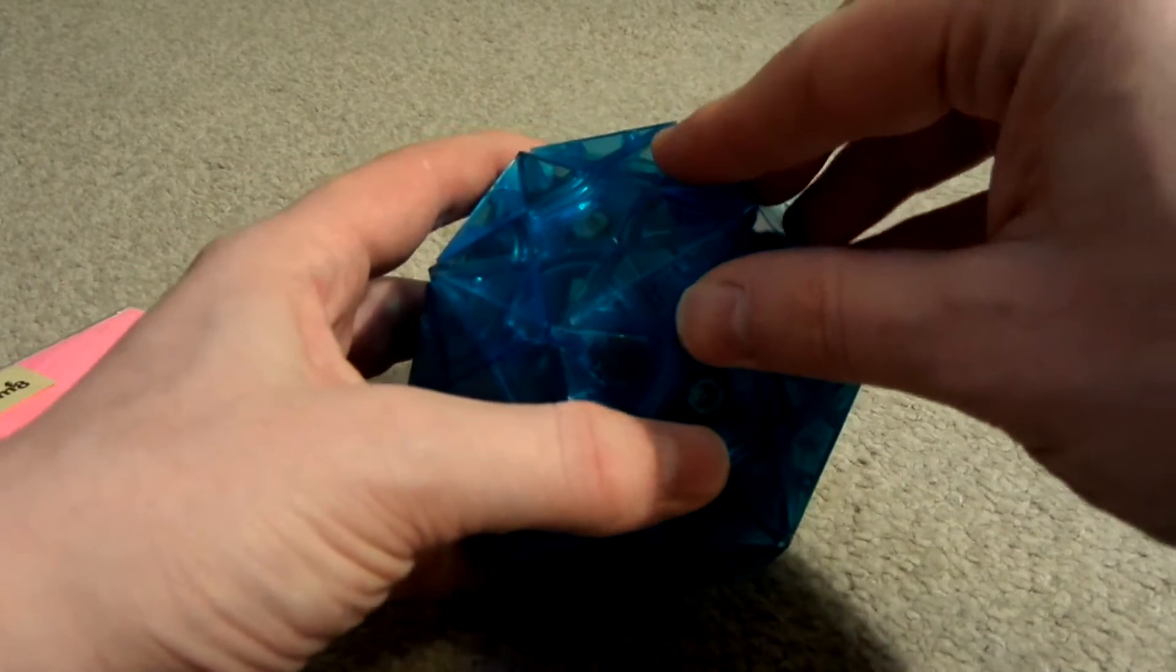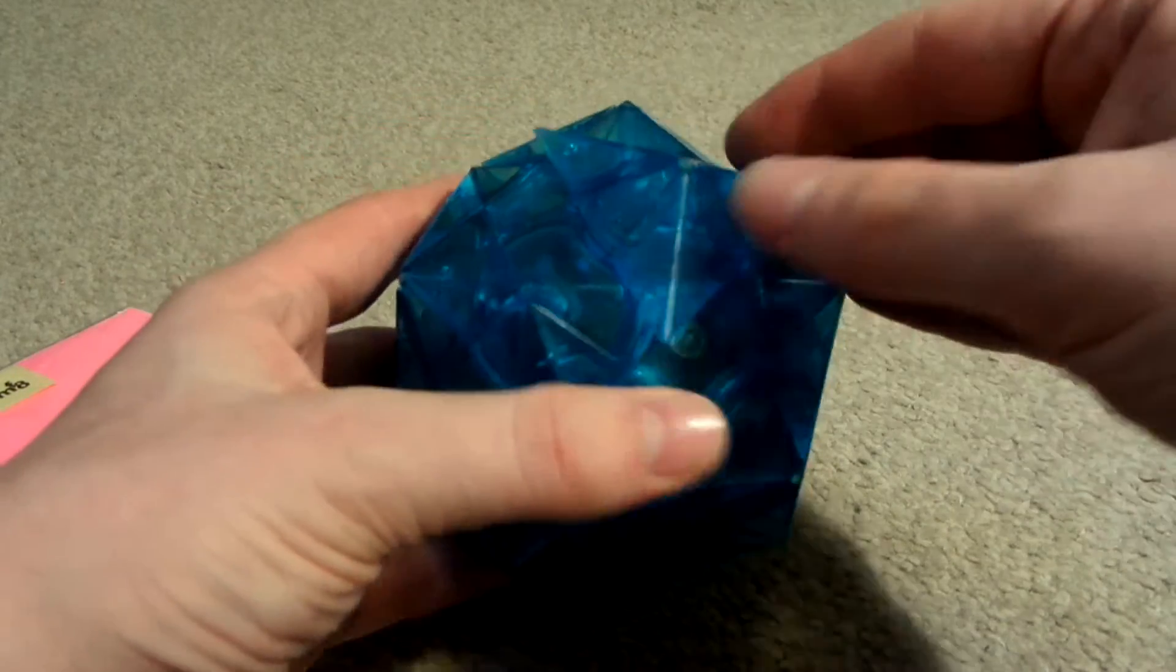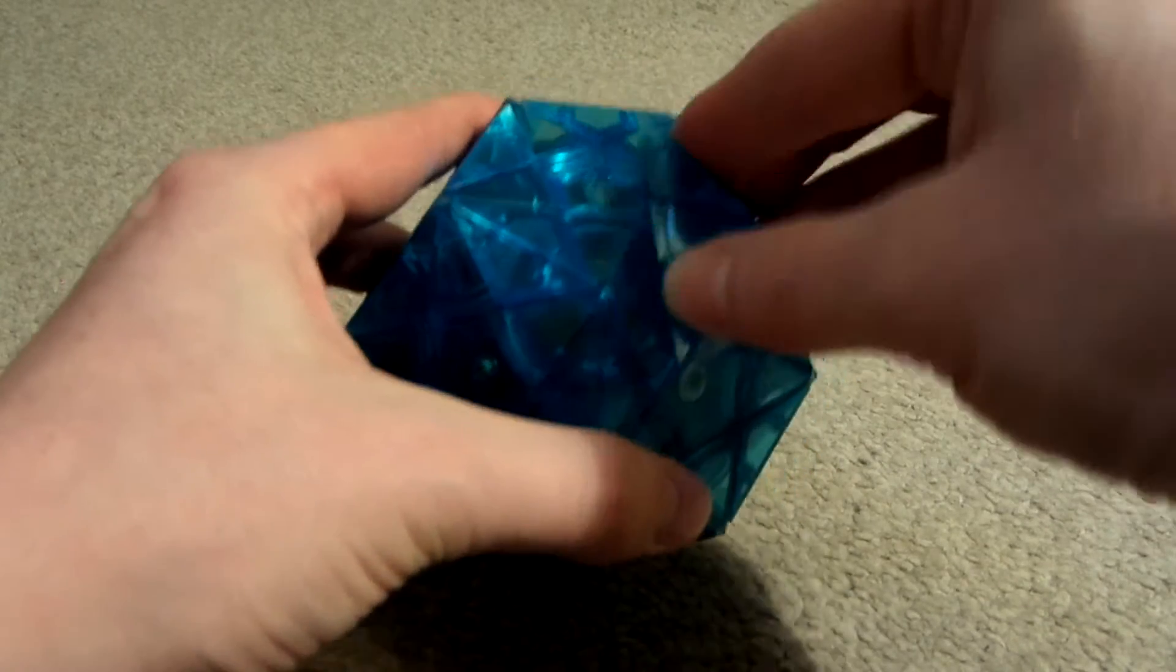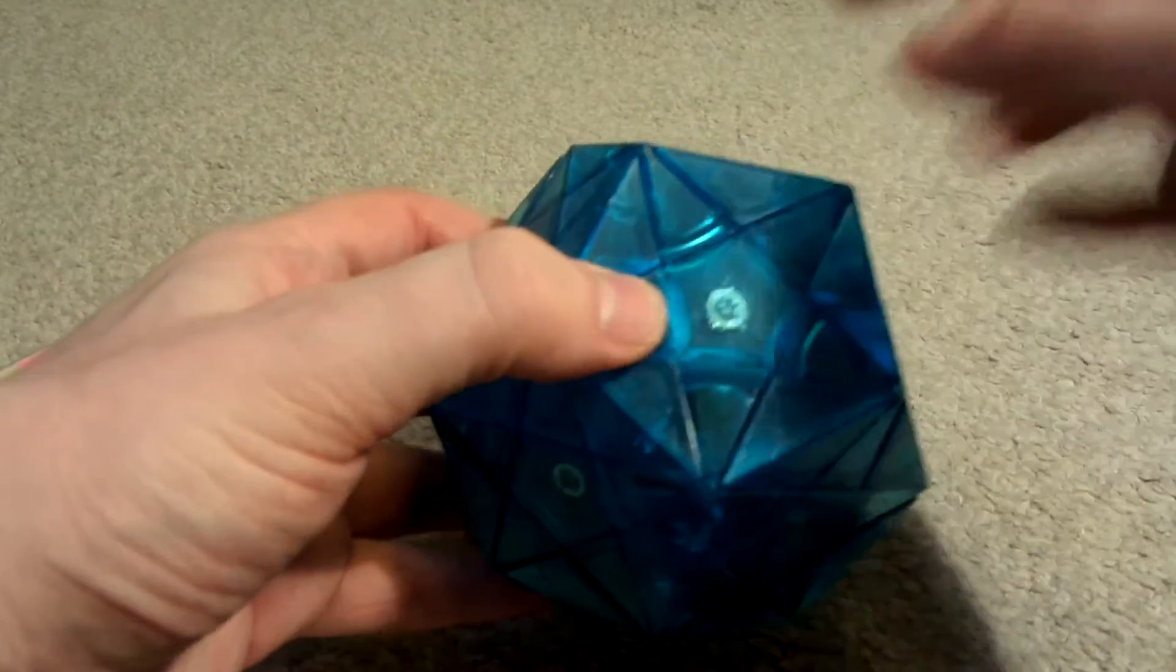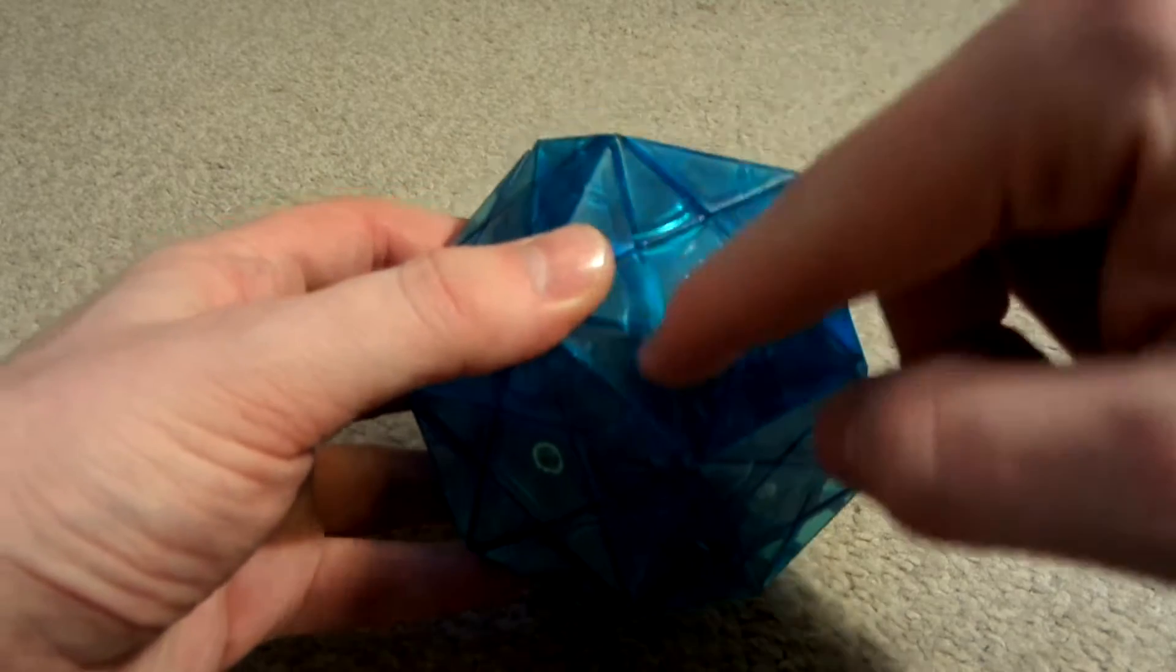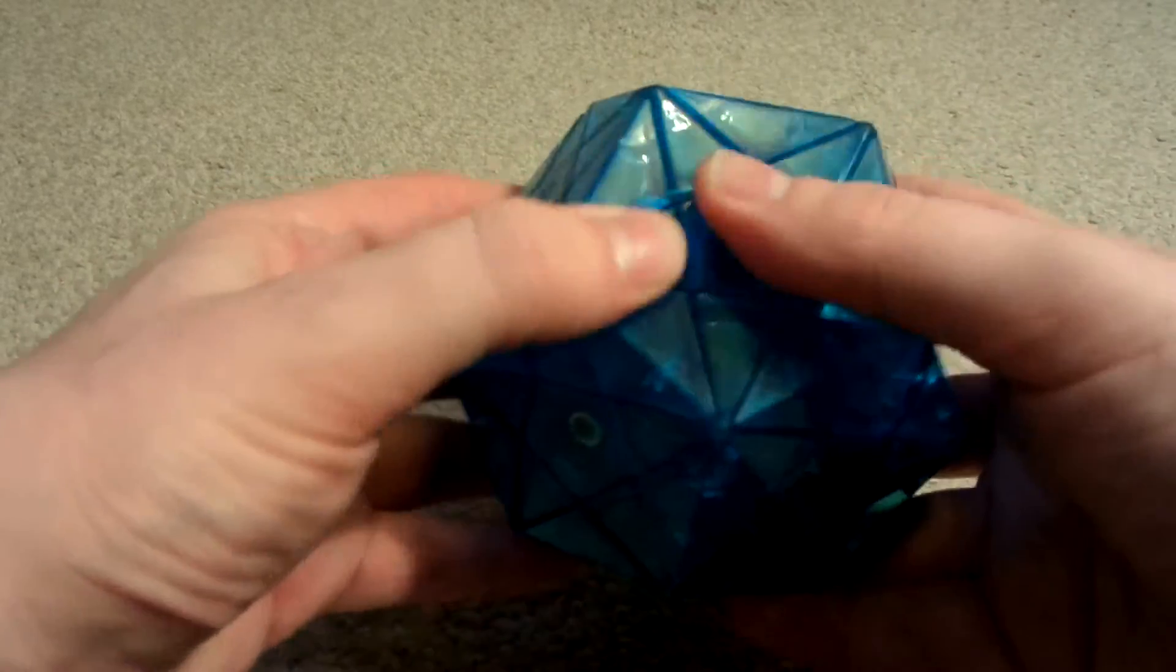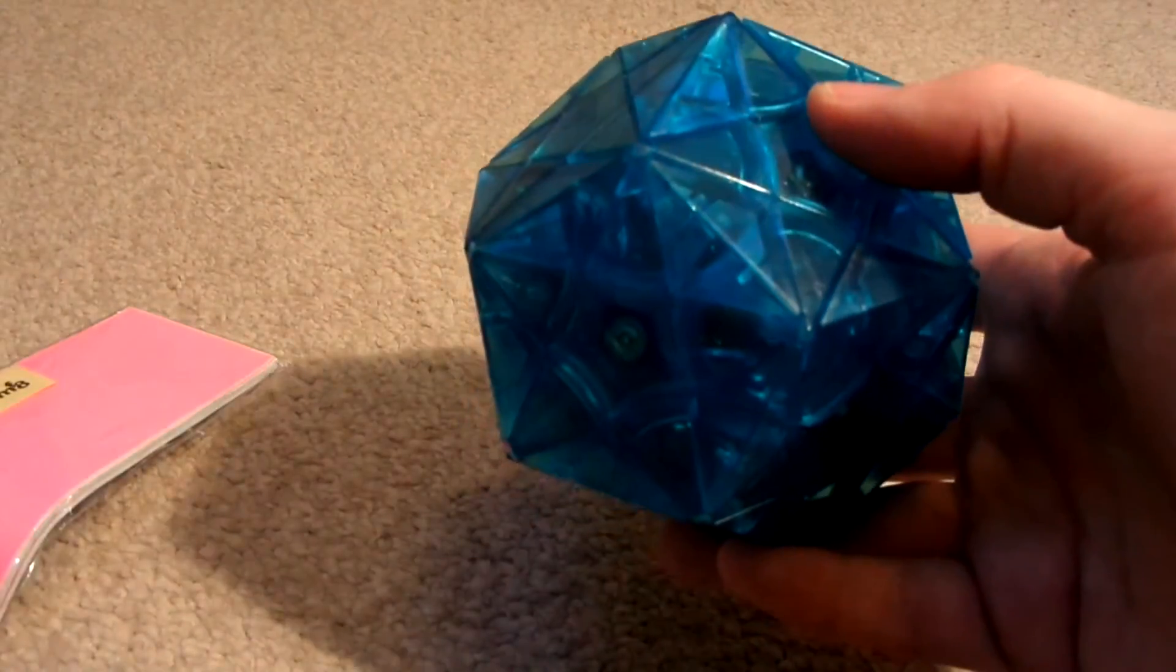And this is a Star Minx 1, so it turns by the corners, like so. The Star Minx 2, it turns along these cuts. So, it's a face turner I think.